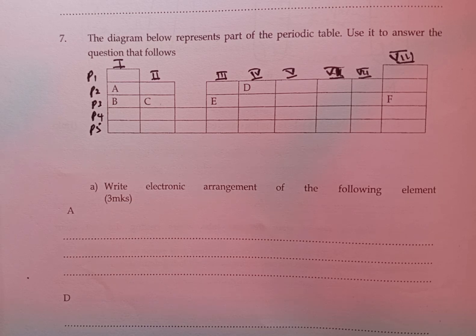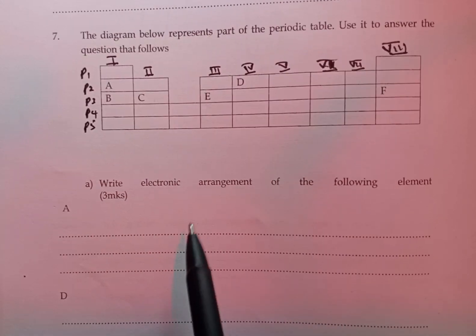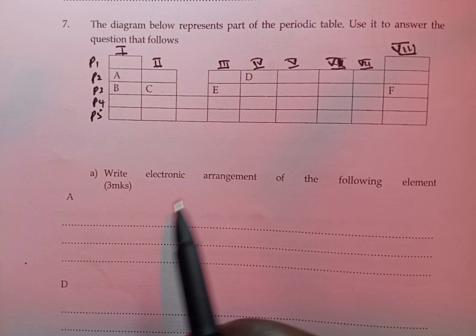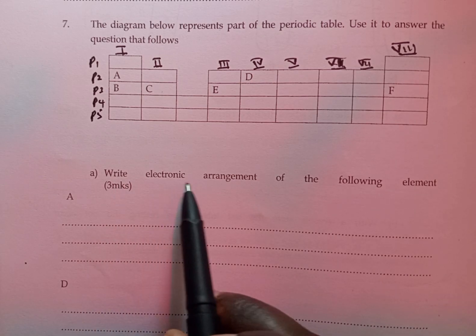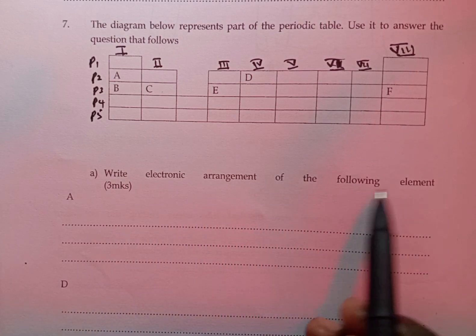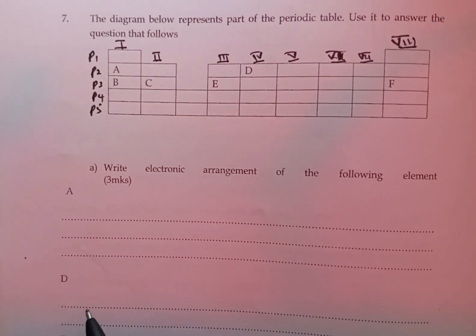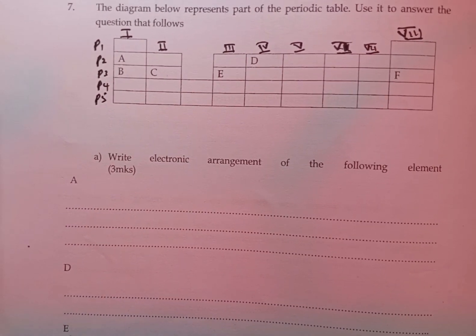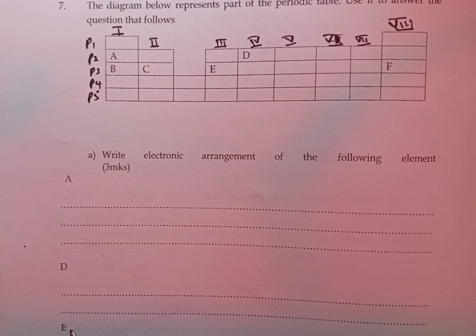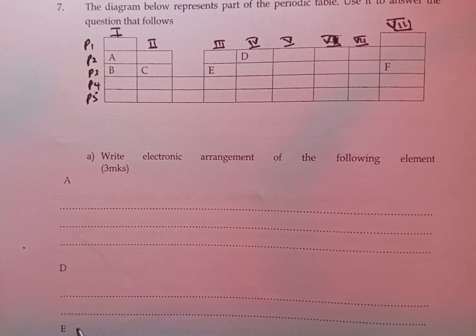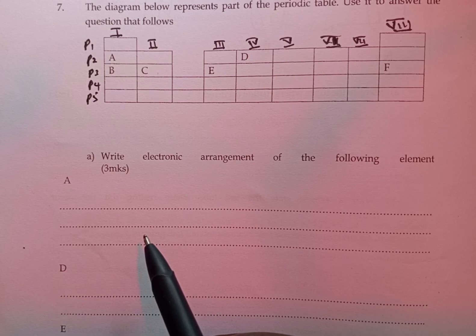We can now answer the questions that we have. Part A, write the electron arrangement of the following elements. We have A, we have D, and lastly we have E. To write the electron arrangement or configuration, we are going to use periods and groups.